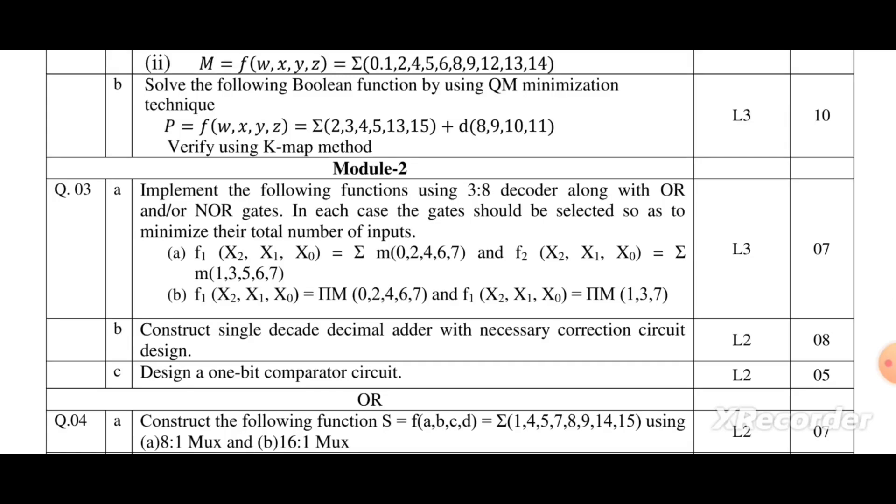In each case, the gate should be selected so as to minimize the total number of inputs. It is a kind of implementation question using a 3-to-8 decoder, and construct single decade decimal adder with necessary correction circuit design.